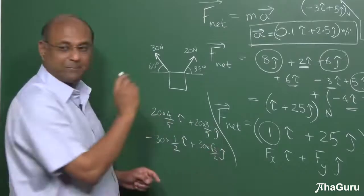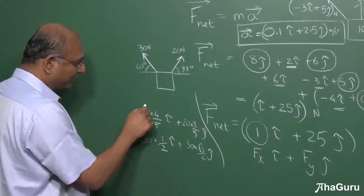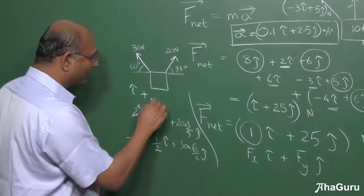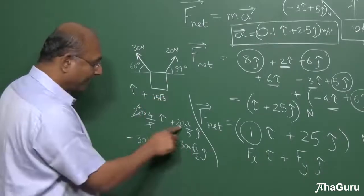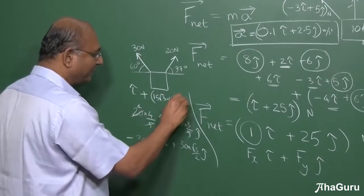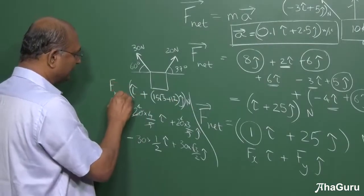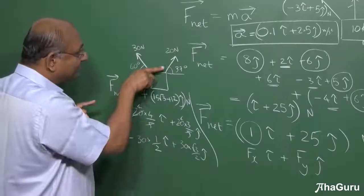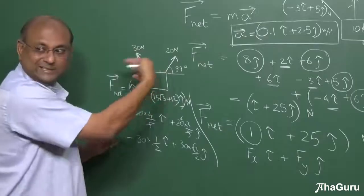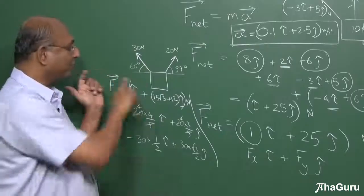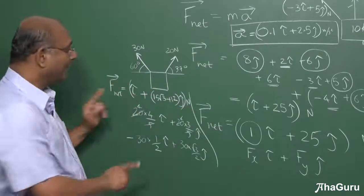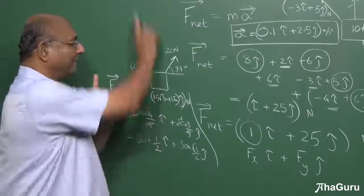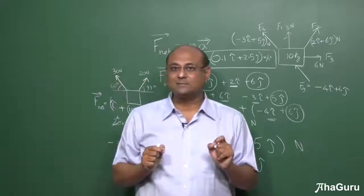Adding these up: the x-components give 16 − 15 = 1i-cap, and the y-components give 12 + 15√3 j-cap newtons. You could also do this by first computing 20cos37 = 16 and 30cos60 = 15 to get the net x-force of 1 N, and 20sin37 = 12 and 30sin60 = 15√3 to get the net y-force of 15√3 + 12 upward.